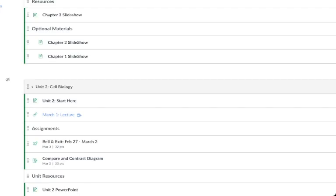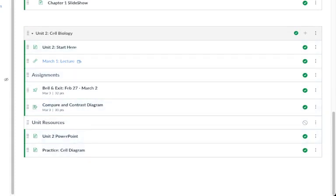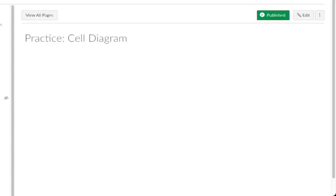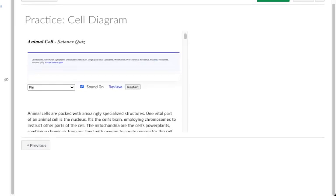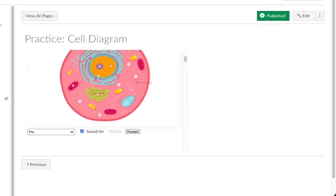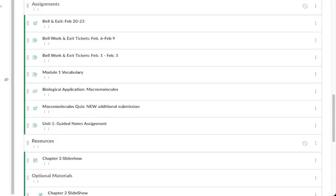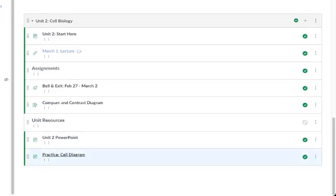When you go to Canvas, you can go to your unit module right here and click on practice cell diagram, where you will find this embedded where you can practice for your upcoming exam. The date for your exam has not been announced yet, so please don't worry if you're struggling with this.